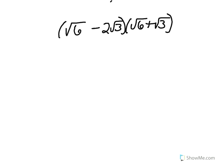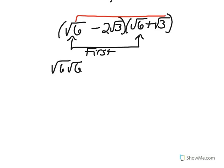When FOILing or using the distributive property, we take the square root of 6 times the square root of 6. That's the first. Then we take the outside, the square root of 6 times root 3. Then we take the inside, which is negative 2 root 3 times root 3.